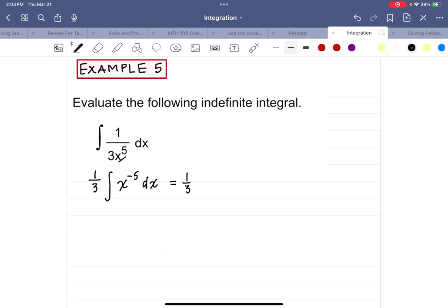So there's the constant. It's going to be x to the negative 5 plus 1 divided by negative 5 plus 1. And don't forget, there could have been a constant whose derivative was zero. So we put plus c.